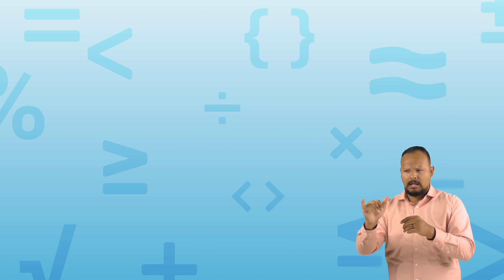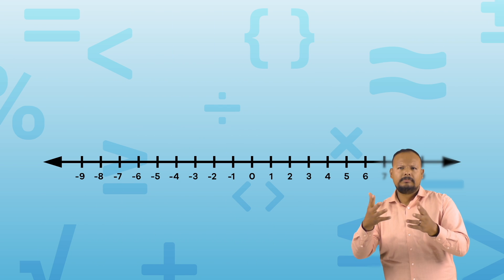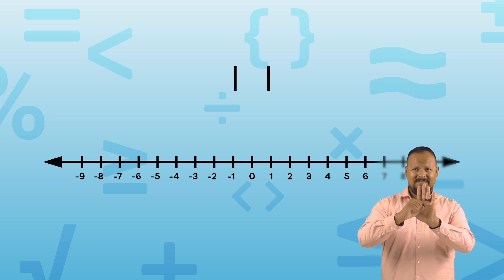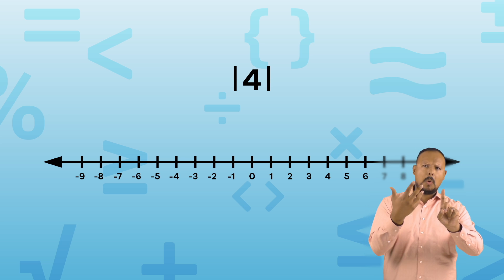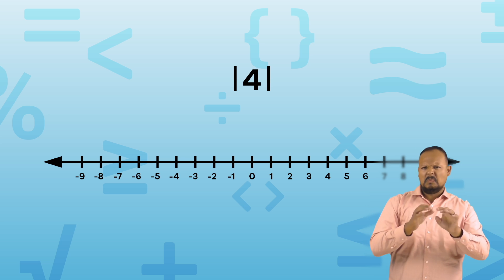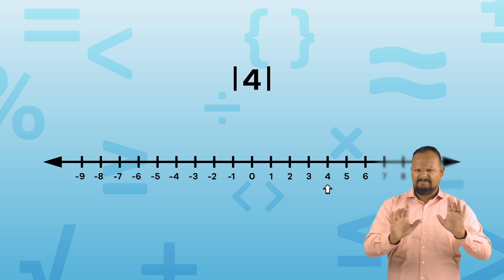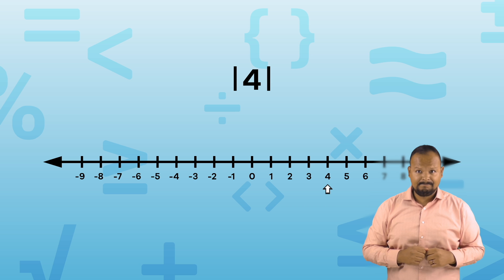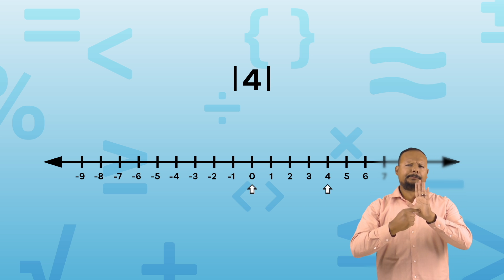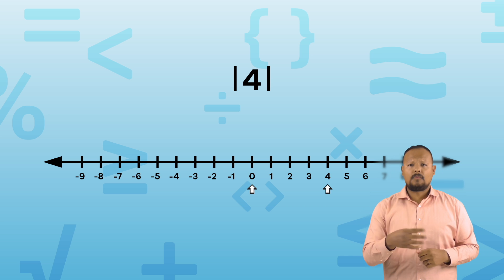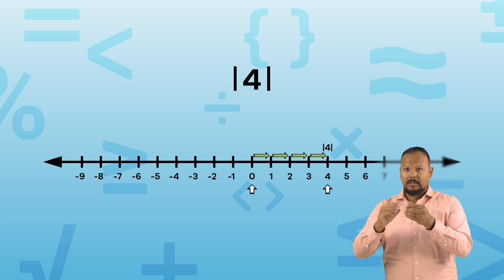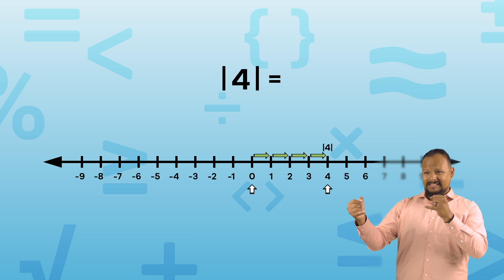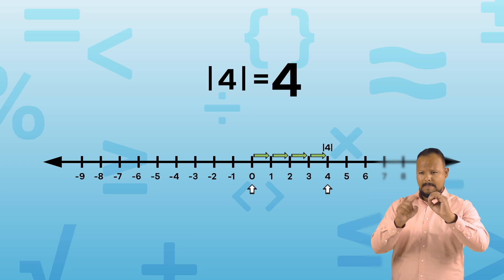Let's try an example. If you were to figure out the absolute value of 4, you would look at how far away the number 4 is from the number 0 on a number line. The absolute value of 4 equals 4.